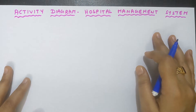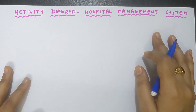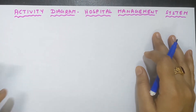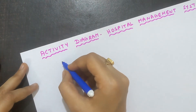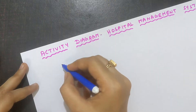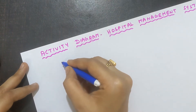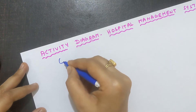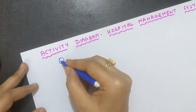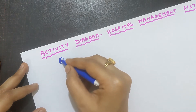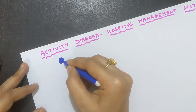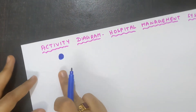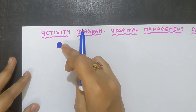So what is the first step? We learned about the start symbol. That is always the first step. You need to draw a circle and shade it inside. This is your start symbol — the very first step of the activity diagram.